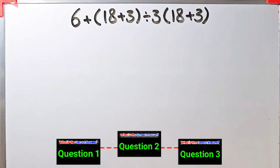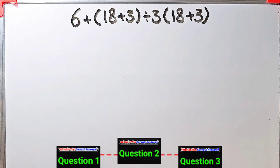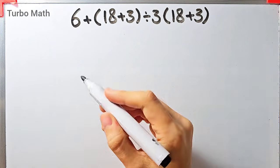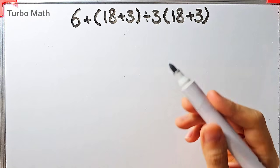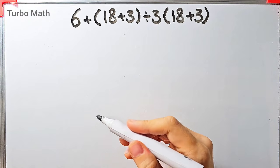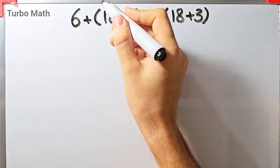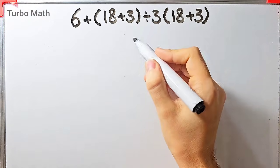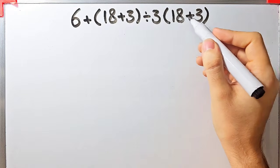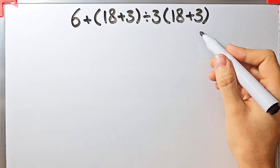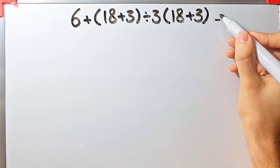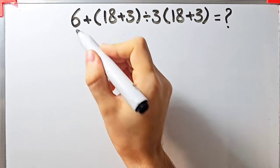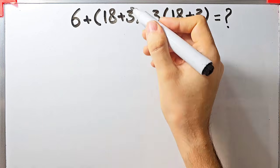Hi friends, welcome to Turbo Mass channel. In this video we are going to solve three questions about the PEMDAS rule. In the first question we have: 6 plus open parentheses 18 plus 3 close parentheses divided by 3, then times open parentheses 18 plus 3 close parentheses. What is the answer of this question?